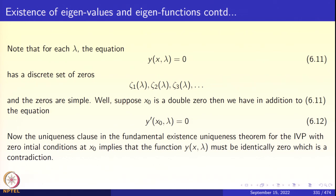Let me recapitulate the simplicity part. Suppose x₀ is a double zero. Then in addition to y(x₀, λ) = 0, we also have y'(x₀, λ) = 0. The uniqueness clause then tells you that y is identically zero, which is a contradiction. So all zeros are simple.